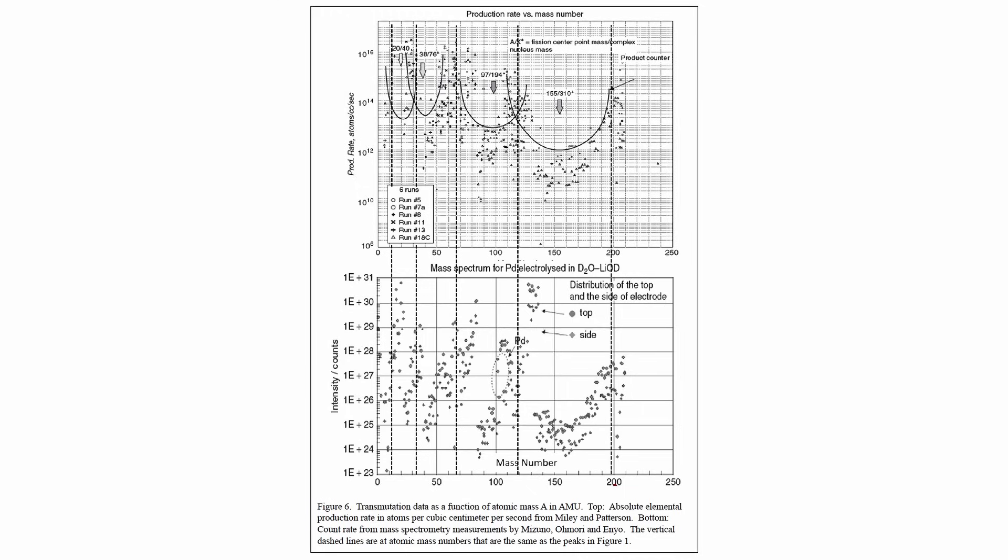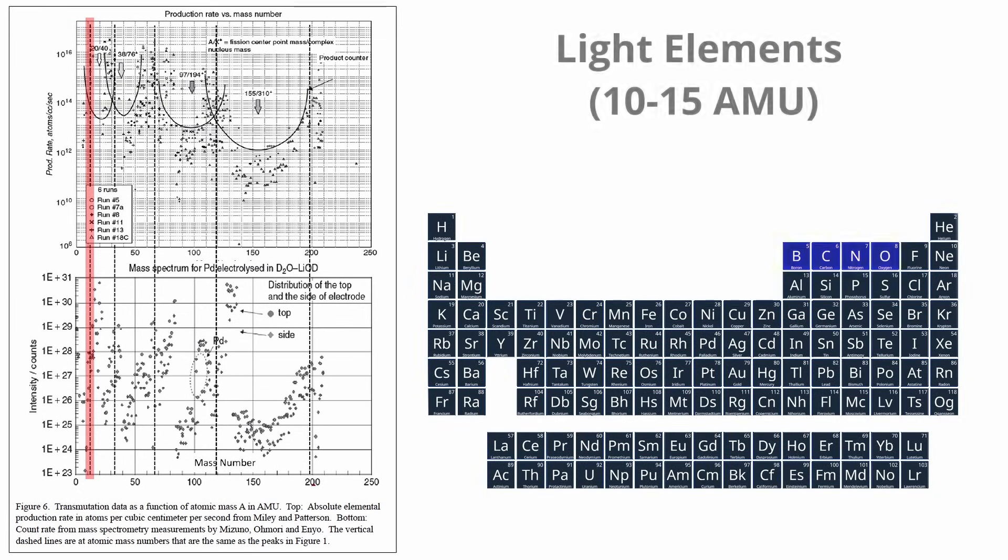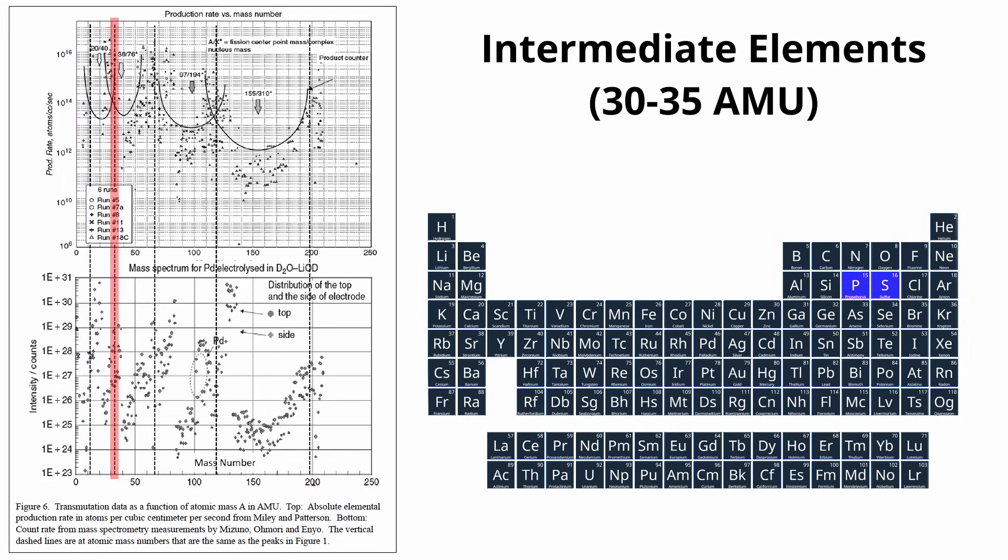The five peaks correspond to specific atomic mass ranges, each aligning with particular elements or clusters of elements frequently observed in LENR experiments. The first peak, light elements, typically includes carbon, a ubiquitous light element often detected in LENR experiments. The second peak, intermediate elements, includes elements like sulfur and phosphorus.